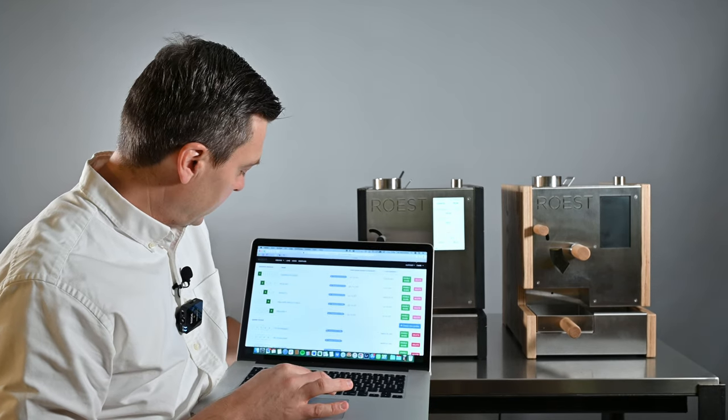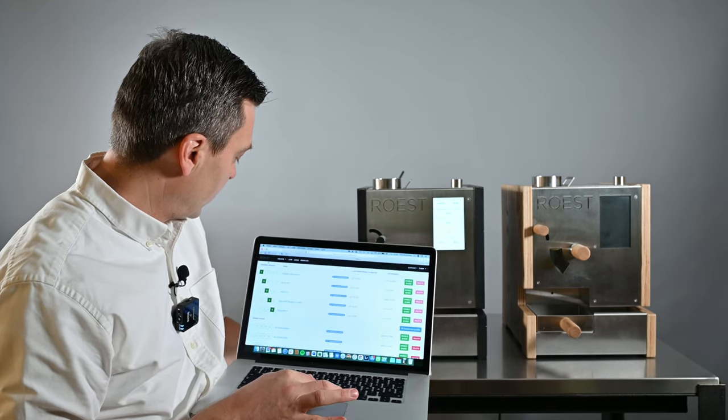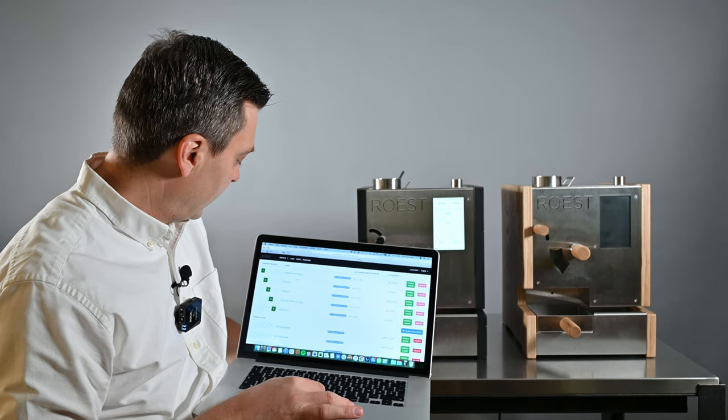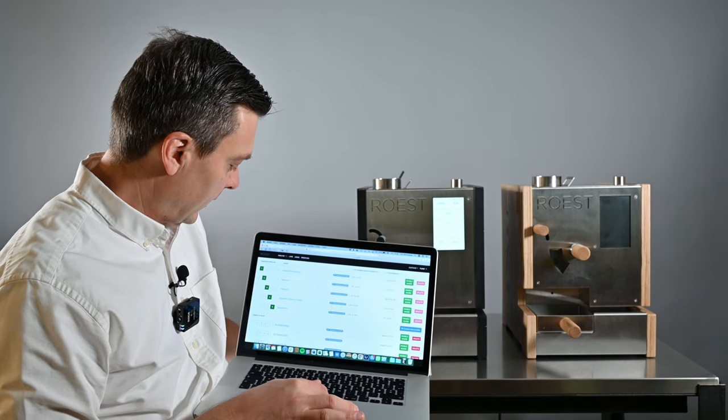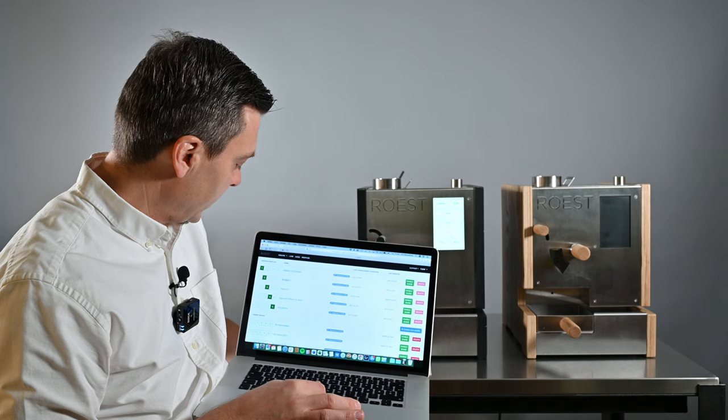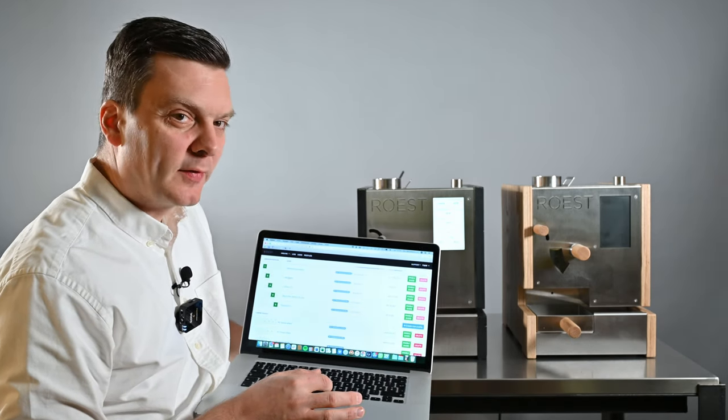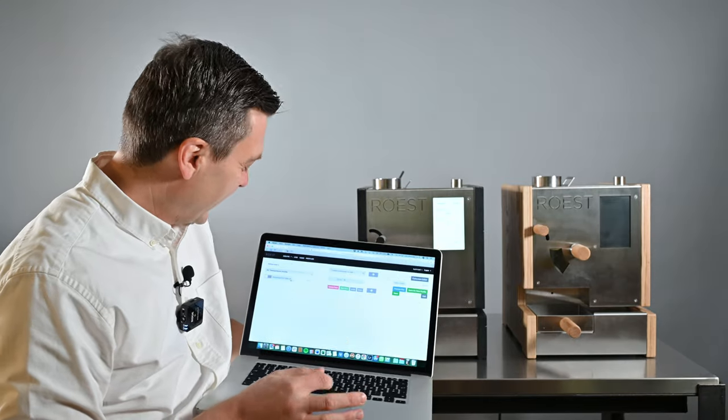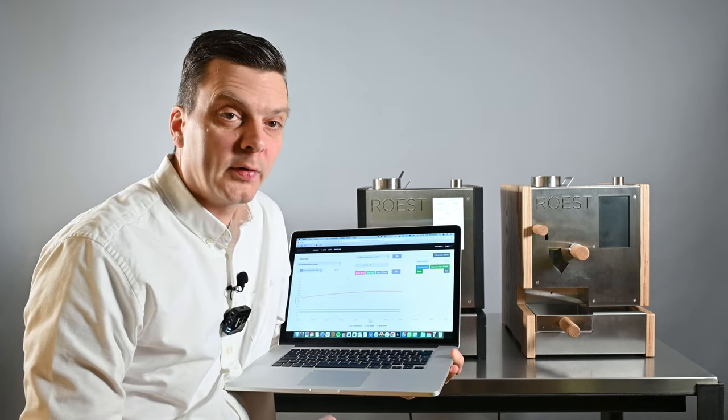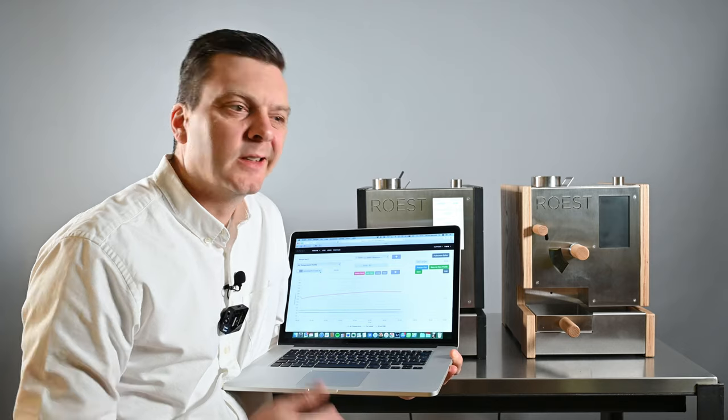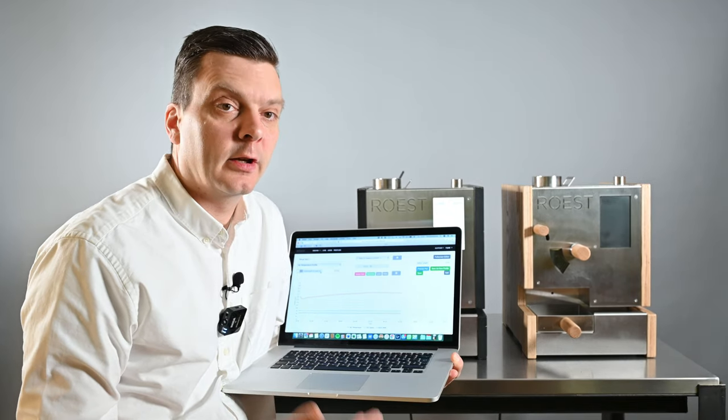When you get a Röst, you get a login to their website. This is different profiles that I made. So I have one that I call Kenya Test 1. That's my favorite profile. It works for everything. That's kind of my most used profile. So if I have a new sample that I don't really know what it is, I can use that profile. And most of the times that coffee will be maybe not perfectly roasted, but roasted well enough so that I can actually evaluate the quality of the coffee.